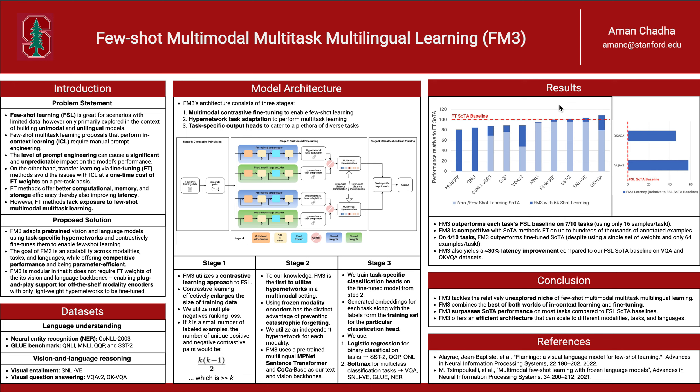On 4 out of 10 tasks, FM3 outperforms fine-tuned state-of-the-art, despite using a single set of weights and only 64 examples per task. Looking at the latency numbers in the right graph, FM3 yields a 50% latency improvement on average compared to our next best few-shot learning state-of-the-art baseline on VQA and OKVQA datasets.